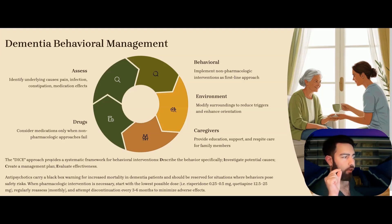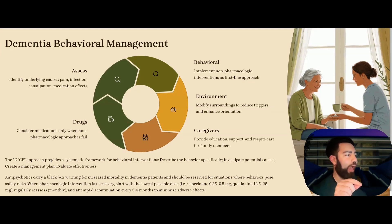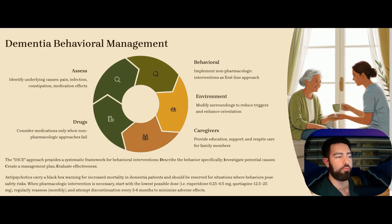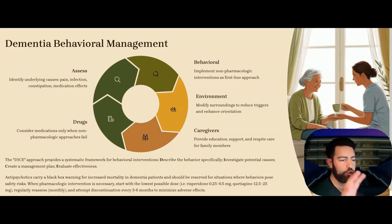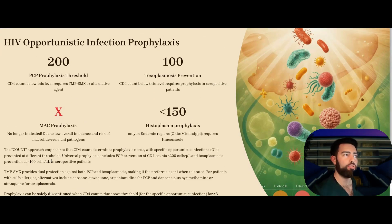Next, approach to dementia and agitation: the DICE framework — Describe the behavior specifically, Investigate the causes, Create a management plan, Evaluate effectiveness. You don't want to jump into antipsychotic therapies because antipsychotics have a black box warning for increased mortality in dementia patients and are reserved only for behaviors that pose safety risks. If needed, use the lowest possible dose — risperidone 0.25 or 0.5 mg, or quetiapine 12.5 to 25 mg — and reassess monthly, attempting to discontinue every 3 to 6 months.